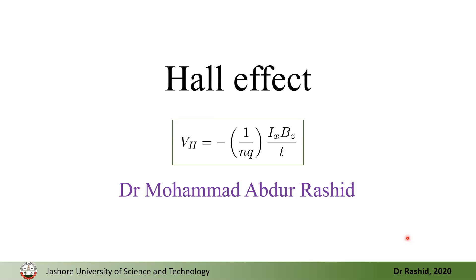Salaam alaikum. Today we shall talk about Hall effect and derive an expression for Hall voltage. In 1879, Hall observed that when an electric current passes through a material placed in a magnetic field, a potential across the edges of the material develops such that the direction of the potential is perpendicular to both the direction of the current and the applied magnetic field.